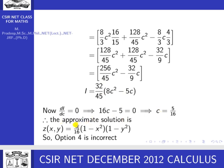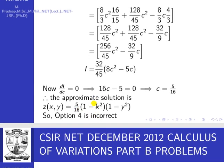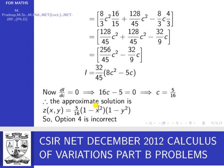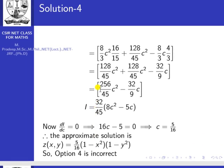So the approximate solution is z₀ = c(1 − x²)(1 − y²) = (5/16)(1 − x²)(1 − y²). Option 4 stated z₀ = (x² − 1)(y² − 1)/16, which is incorrect — the correct coefficient is 5/16, not 1/16. Therefore options 1, 2, 3 are correct and option 4 is wrong. Thank you.